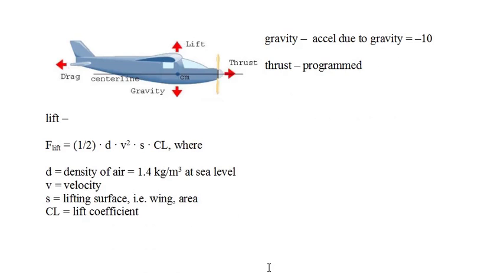Our model for lift force is: lift force equals one-half times d (the density of air), times the velocity of the plane squared, times s (the surface area of the wing), times the lift coefficient cl. All of these terms are self-explanatory, except for the lift coefficient, which we'll look at now.